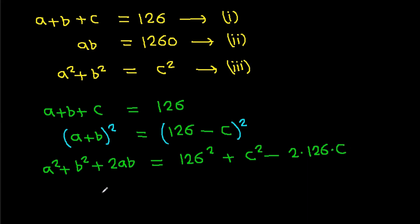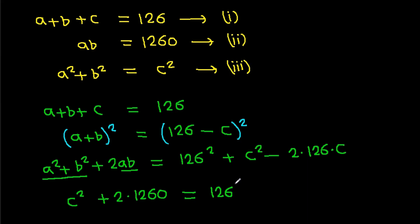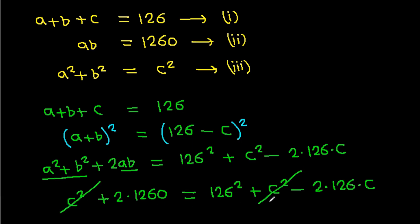Expanding: A squared plus B squared plus 2AB equals 126 squared plus C squared minus 2 times 126 times C. Since A squared plus B squared equals C squared from equation 3, the C squared terms cancel out.